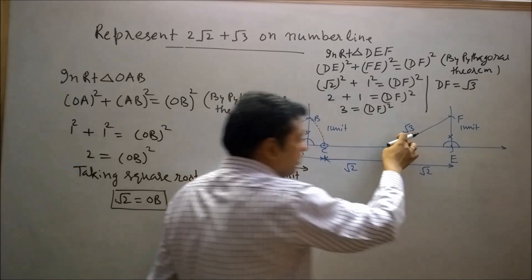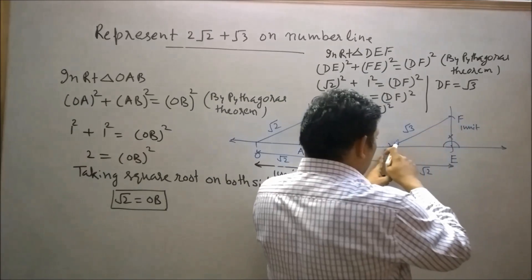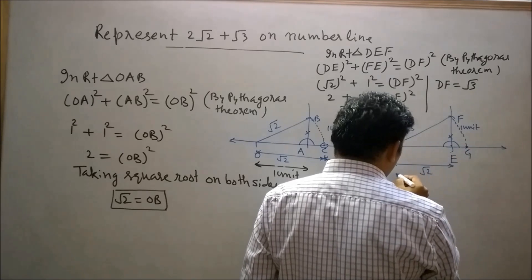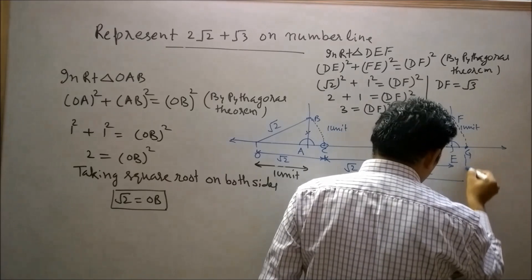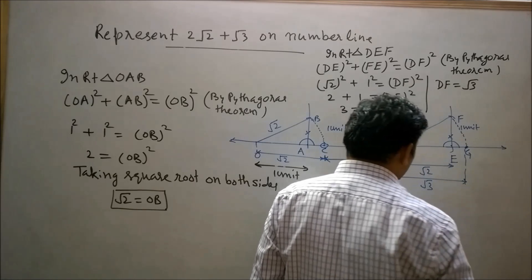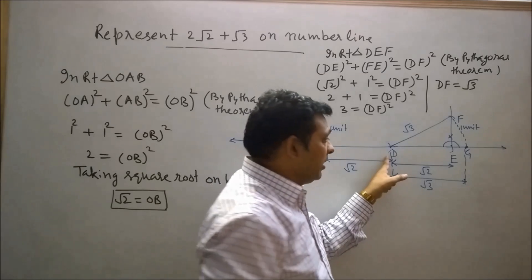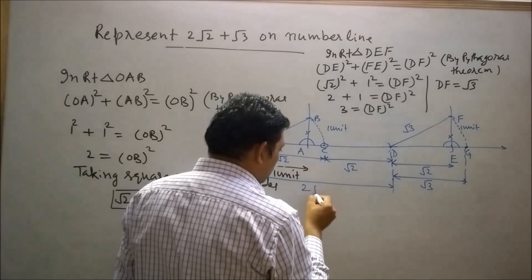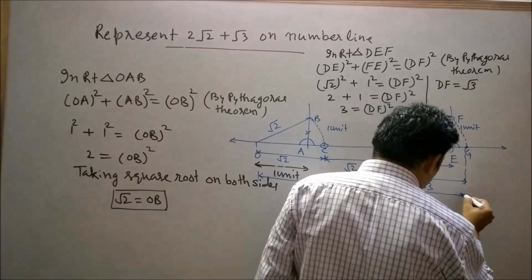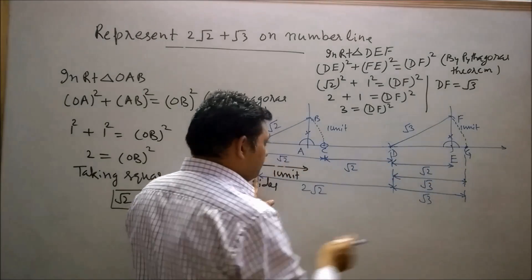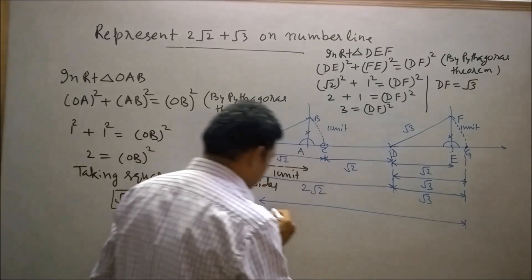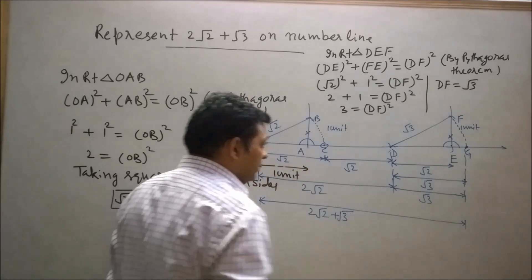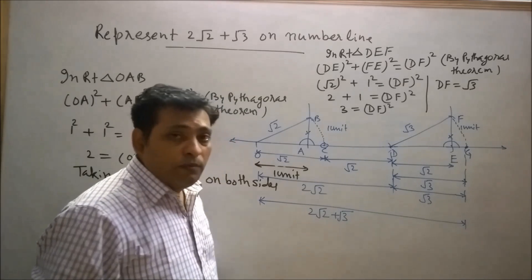Now draw an arc equal to DF from the center D. Let's say this arc will intersect the number line at G. Then DG will be √3. Since DG and DF are the radii of the same circle, radii of the same circle are always equal. So here OD is 2√2 and DG is √3, so we can say OG represents 2√2 plus √3. So point G represents 2√2 plus √3 on the number line.